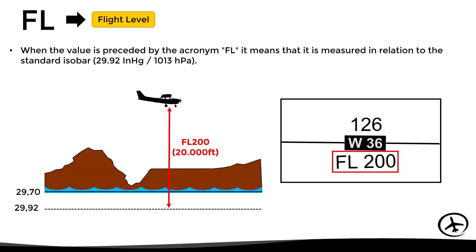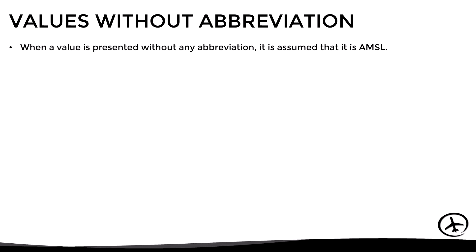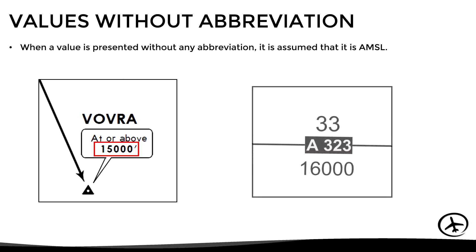Now in some cases we might find values without abbreviation. In these cases it is assumed that the value is in relation to mean sea level, as we can see in these examples of 15,000 and 16,000, 15,000 feet.